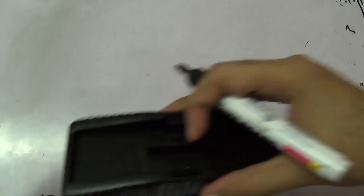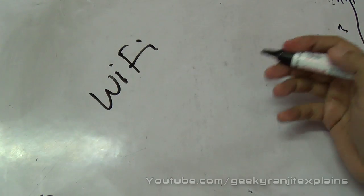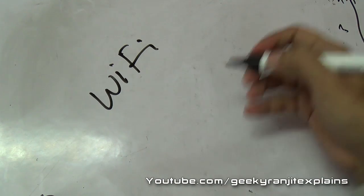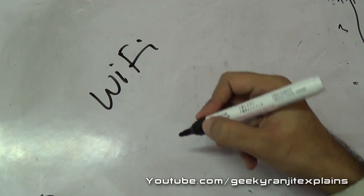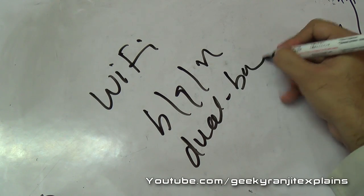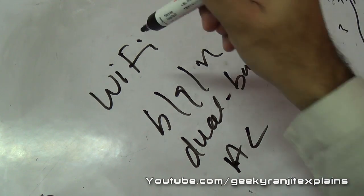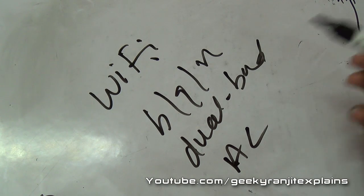So in my next episode of Geeky Ranjit Explains, I was planning to take up a topic on Wi-Fi routers. Quite a few of you have asked me to talk about that because these days we have a lot of types of Wi-Fi routers - B, G, N, dual band, even the new AC standard. Do let me know if you want me to take up the topic of Wi-Fi routers next week, or suggest any other topics.